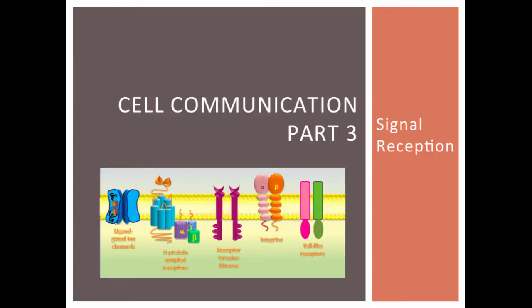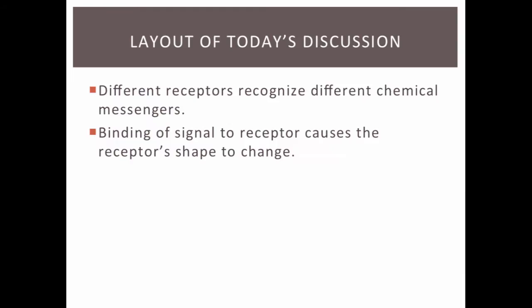Hey students, this lesson is all about how cells receive signals. We'll focus on how those signals cause a response in the target cell in a future video. This is a layout of our discussion. First, we will learn about how receptors respond to a specific chemical messenger. We will then take a look at what happens to a signal receptor when it binds to a signaling molecule.